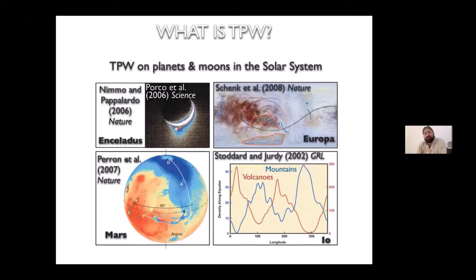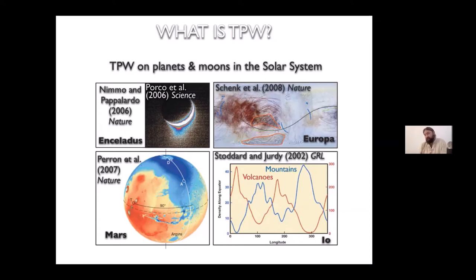On Saturn's moon Enceladus, you have a buoyant geyser coming out of exactly the South Pole — that buoyant negative mass anomaly wants to be at the South Pole. On Jupiter's moon Europa, there are phenomenal deformational structures with systematic patterns that can be explained by membrane tectonics due to true polar wander. On Io, there is a systematic distribution of volcanoes and mountains — different types of mass anomalies along longitude. On these other planets and moons without plate tectonics, interpreting the record of true polar wander is quite straightforward.